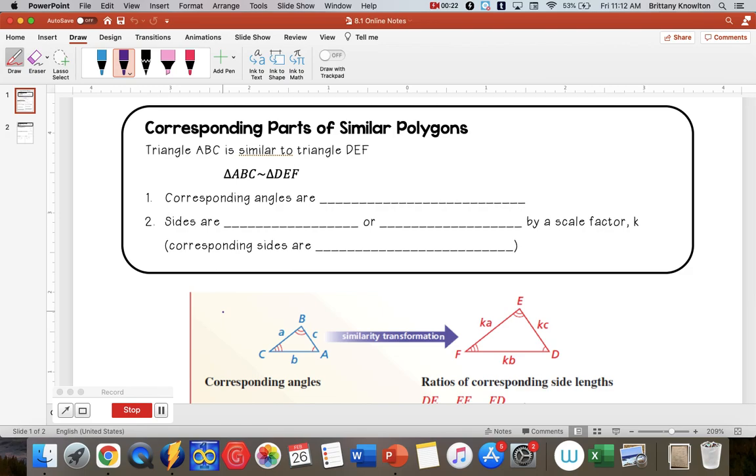And so we have something called corresponding parts of similar polygons. So let's say triangle ABC is similar to triangle DEF. Then these two things are going to be true. The first one is that the corresponding angles are going to be congruent.